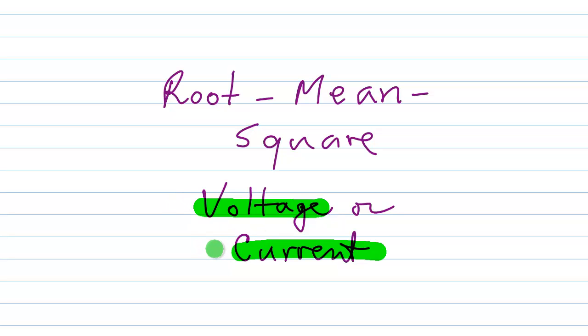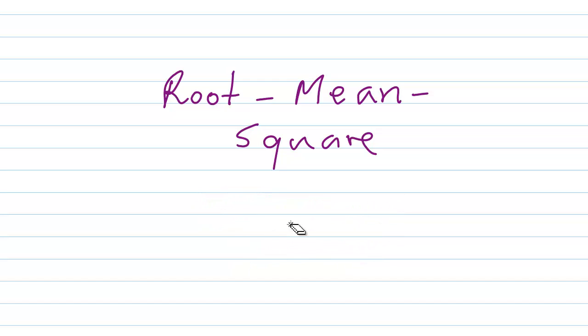or towards one direction and then the other direction, as with current. When it comes to power, technically you can use the root mean square paradigm to calculate power. But things work out rather differently, because power is never negative. Power is always positive. So the root and the square,